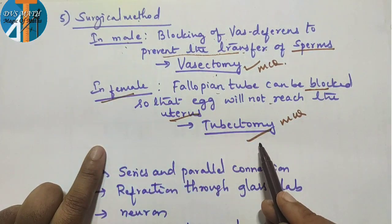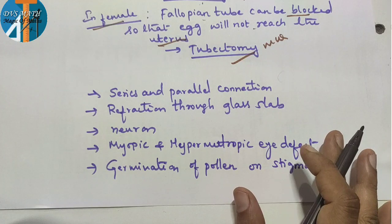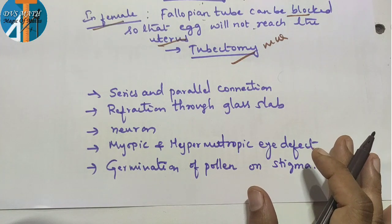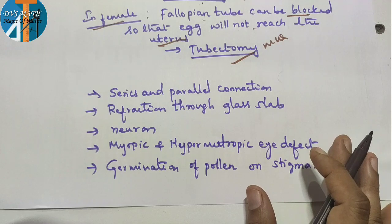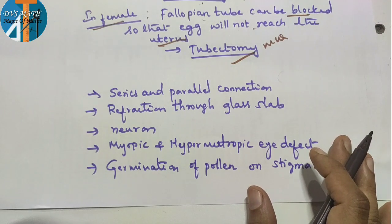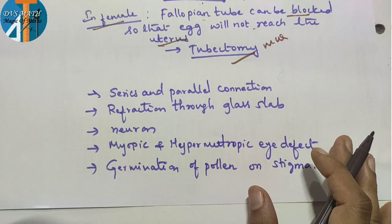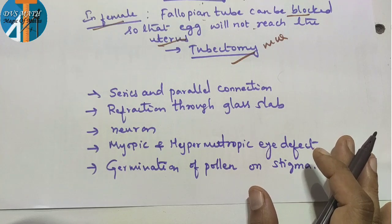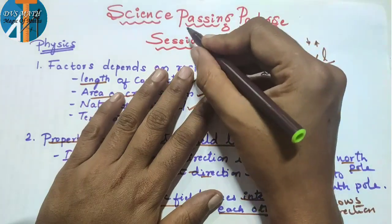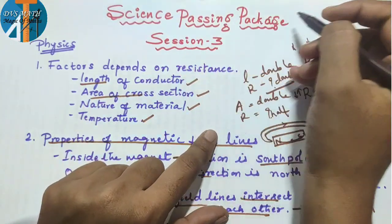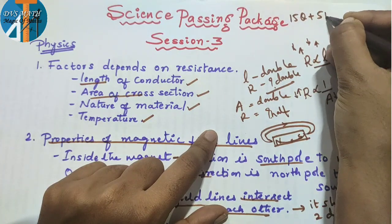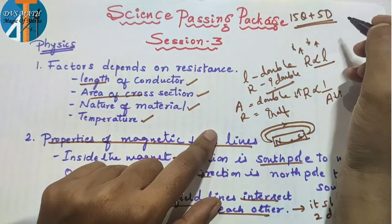In the second session, practice diagrams: series and parallel connections, refraction through a glass slab, neuron, myopic and hypermetropic eye defects, and germination of pollen on stigma. This science passing package session 3 has 15 questions plus 5 diagrams — easy to practice.